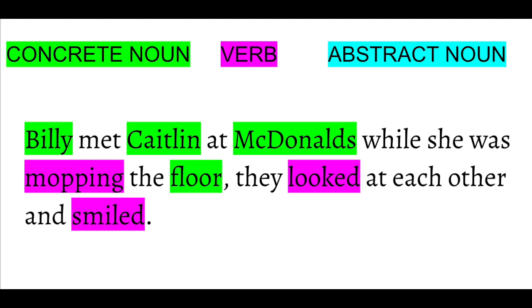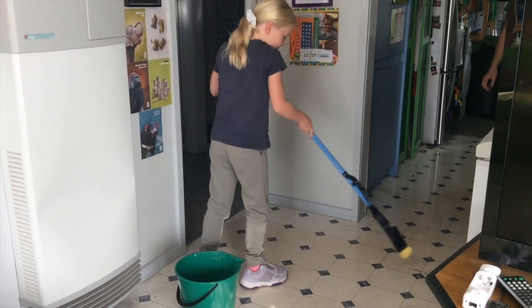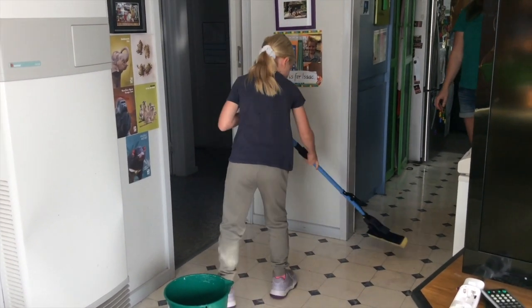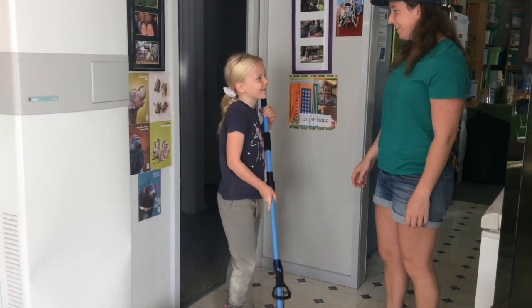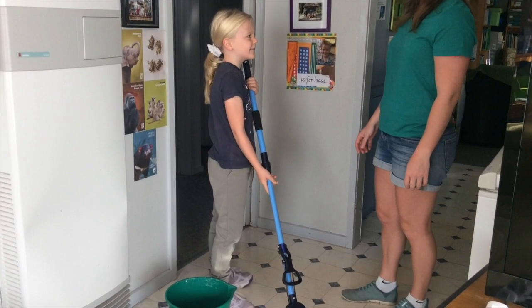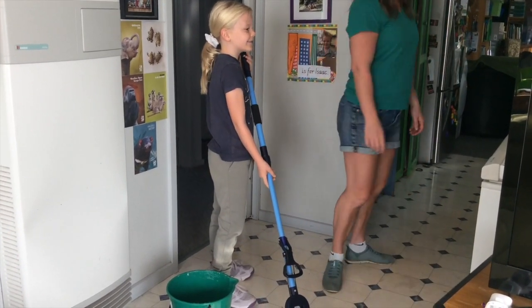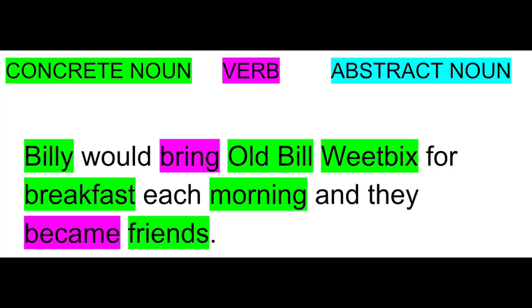In this topic sentence, we can see lots of concrete nouns and verbs telling us what those nouns are doing. We get a really clear picture in our head of what that looks like. Here's another example of concrete nouns and verbs being used in a topic sentence. They do the explaining for us. They help give us a picture of what this looks like.